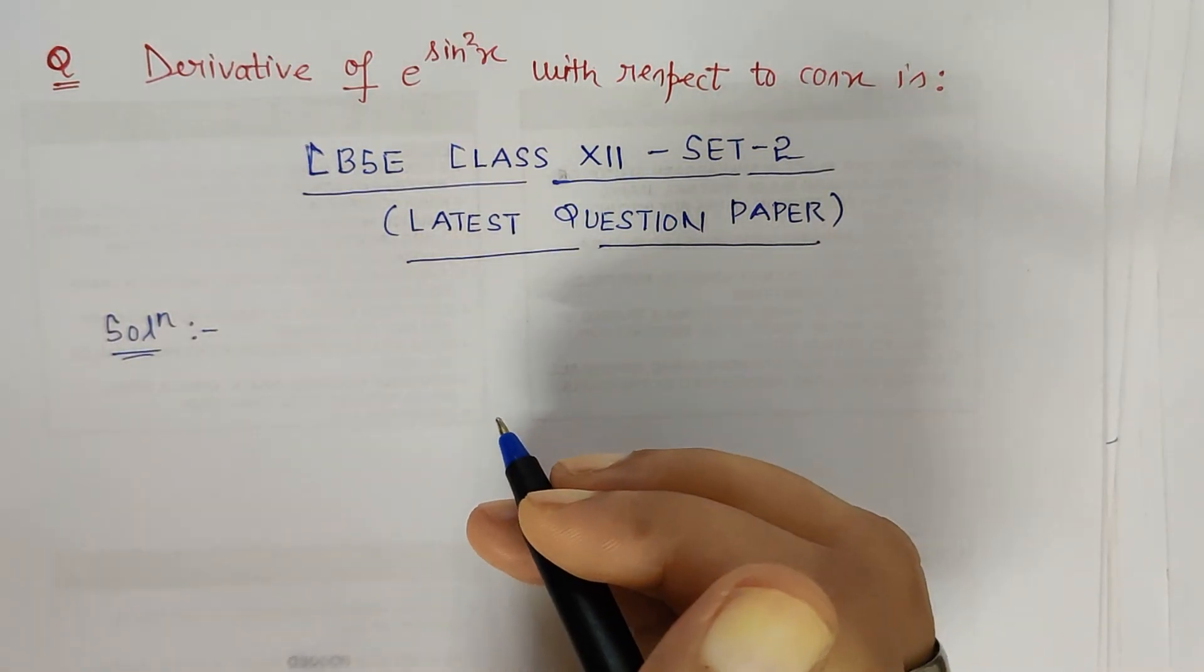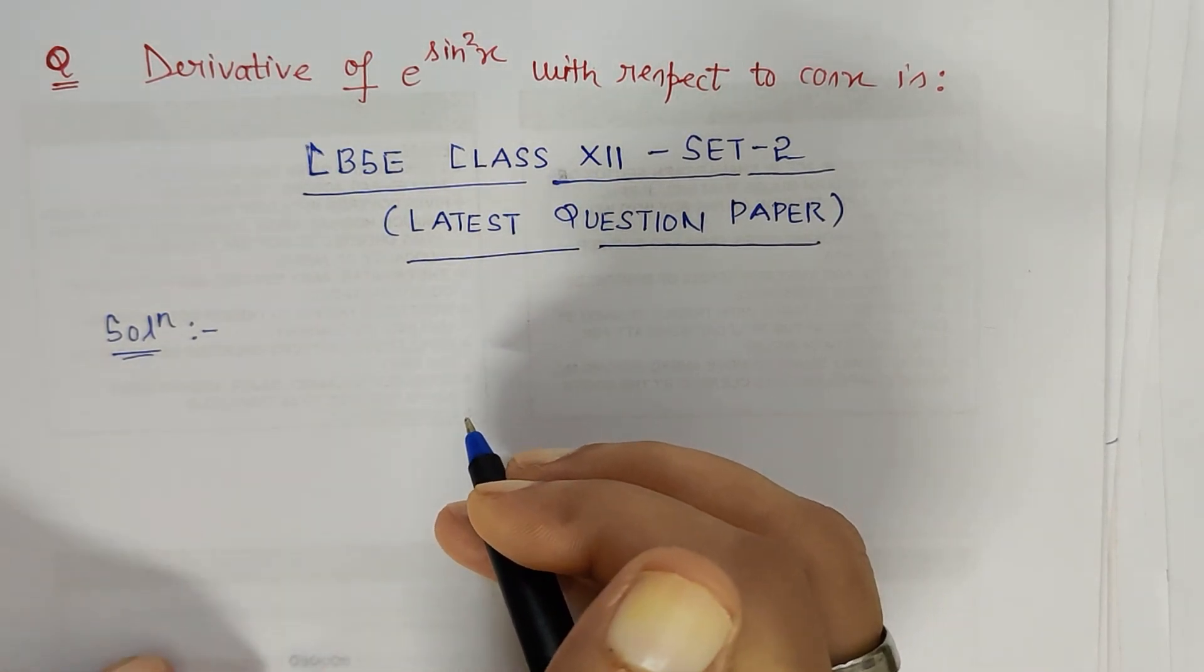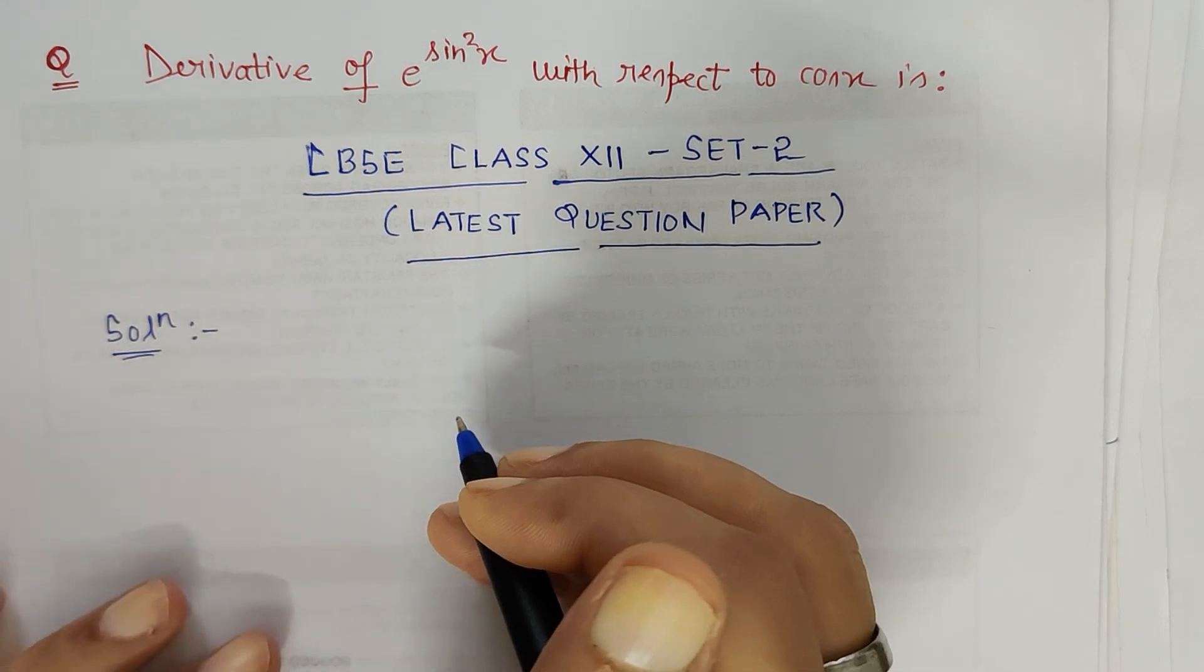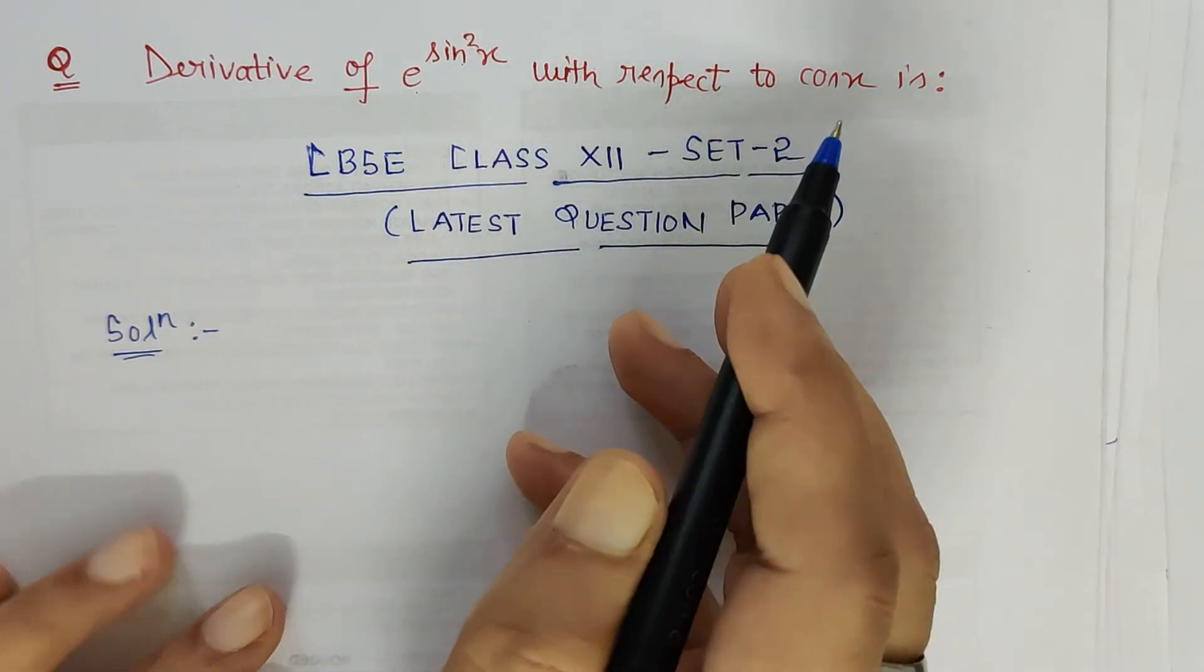Hello friends, I am again here with the CBSE Class 12 Set 2 problem which is from the latest question paper. So here I have been told to find the derivative of e to the power sin squared x with respect to cos x.